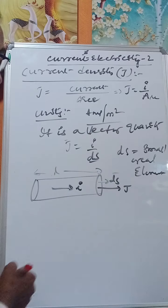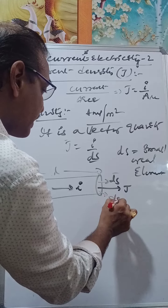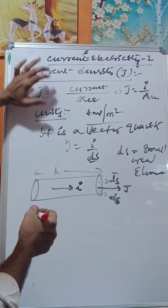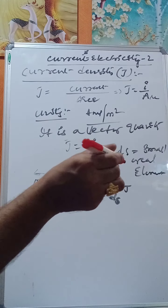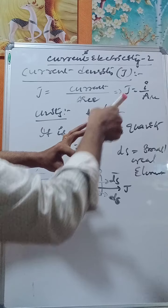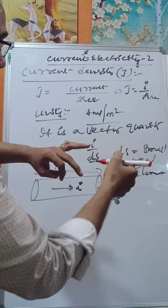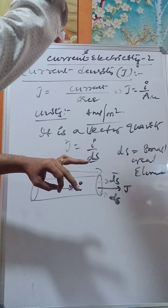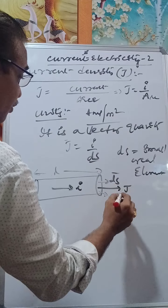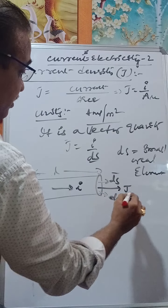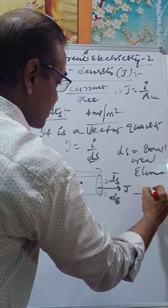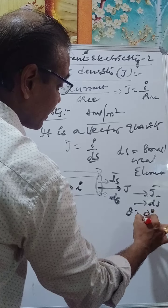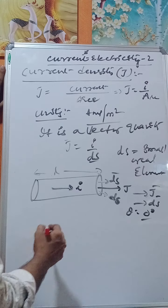Now, ds-bar is the normal to the area. If we consider the cross-sectional area, the normal to that area is ds-bar. For the cross-section of the cylinder, the normal to the area is ds-bar. In this case, the angle between J and ds-bar is theta equals zero degrees.